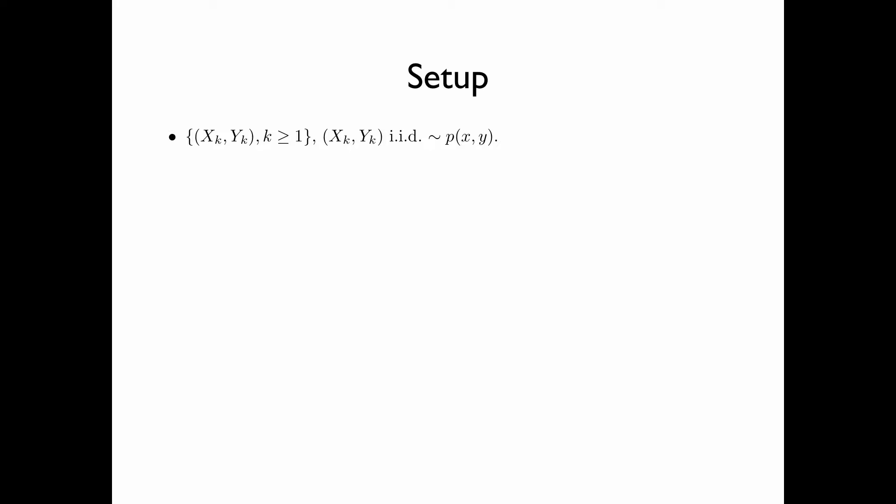In section 6.3, we introduce and discuss the notion of joint typicality. Here is the setup. Consider a bivariate random process x_k, y_k, where k is greater than or equal to 1, and x_k, y_k is a pair of IID random variables with generic joint distribution p(x, y). The pair of random variables x and y denotes the pair of generic random variables with finite joint entropy. We also assume that the alphabets x and y are both finite.